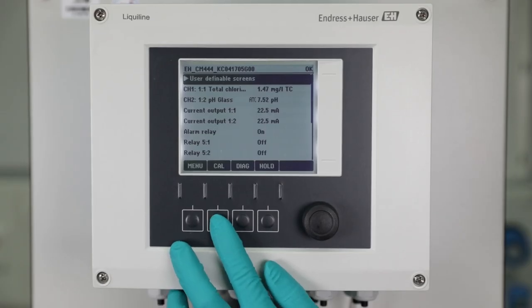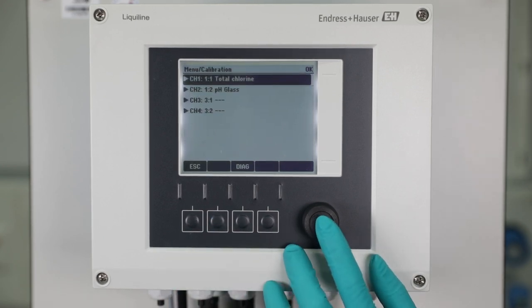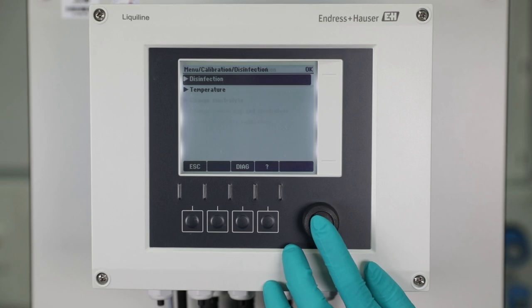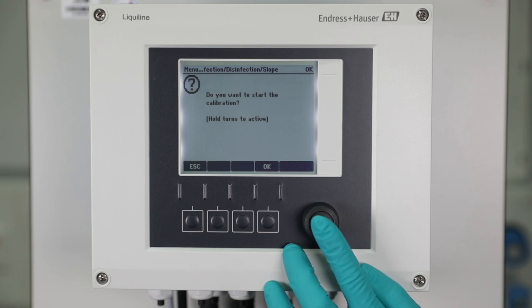Now start the calibration procedure at the liquiline transmitter. Therefore, press Cal, choose Disinfection, again, then Slope and come to Sample Calibration. Start the calibration and press OK.